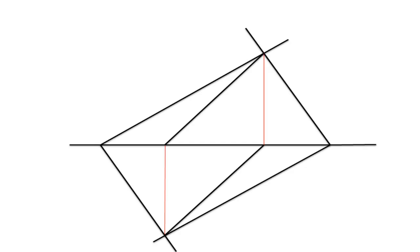To find the dihedral angle, we need to find the true shape of our line of intersection. To find the true shape of our line of intersection, we need to bring lines perpendicular to our line of intersection. I am choosing the plan.